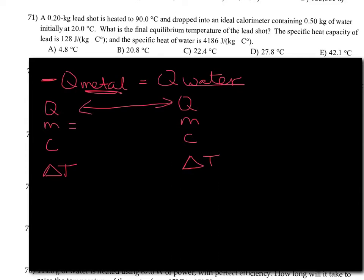The mass of the lead is 0.2 kilograms. The heat capacity of the lead, they tell us, is 128 joules per kilogram. See how that's in the hundreds? So it's a small number. And the change in temperature.